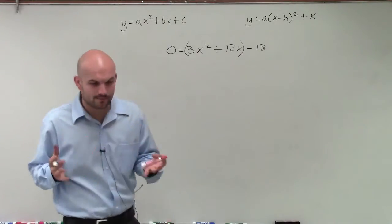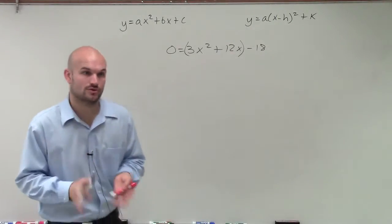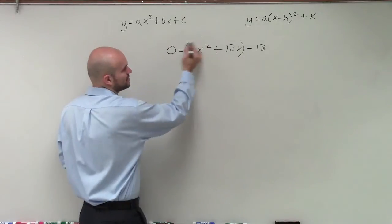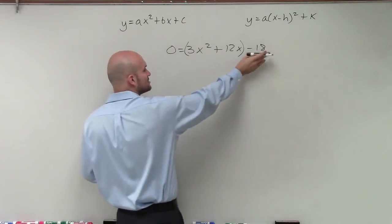And remember, when I was talking about creating perfect square trinomials, we have to make sure that our a is going to be equal to 1. So what I'm going to do is I'm going to factor out a 3 only out of the first two terms. I'm not going to be concerned with this last term.